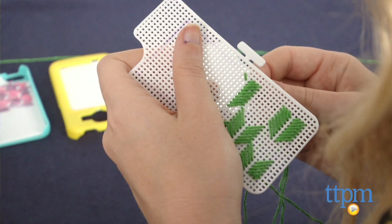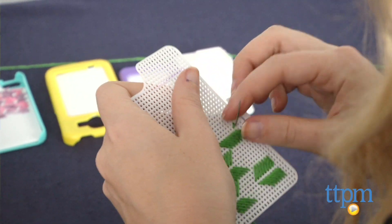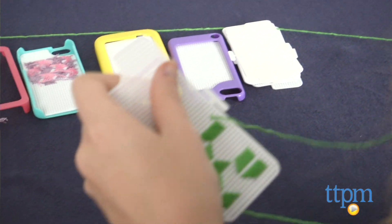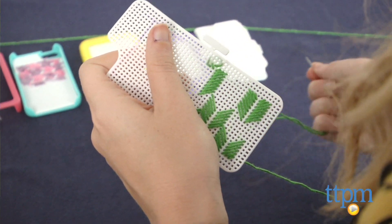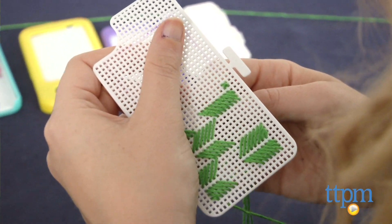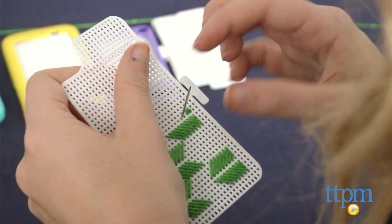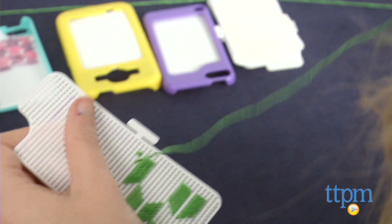There are a few important instructions you need to make sure you pay close attention to though. The first is working with one color at a time. Doing so will ensure the threads don't bulk up on the back of your case, which would make the case hard to fit on your device. This also just makes the process easier.